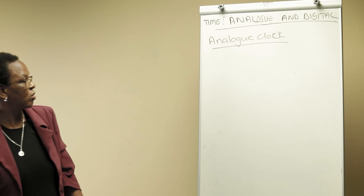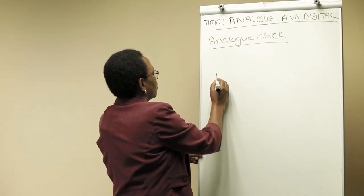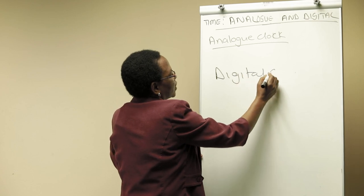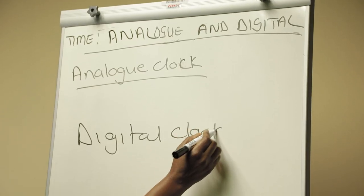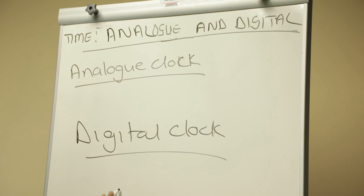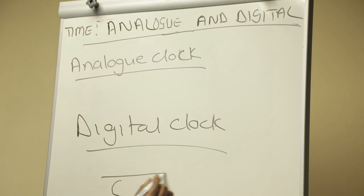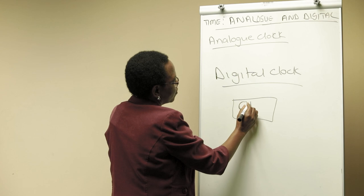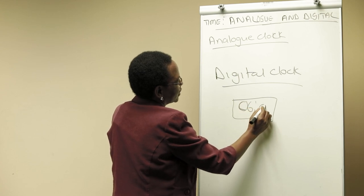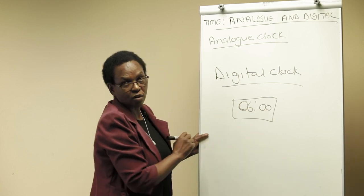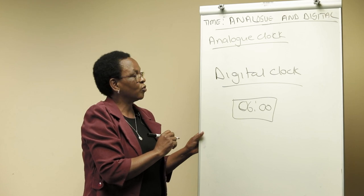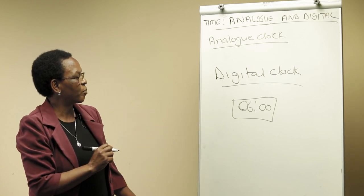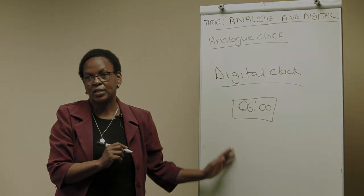We also have what is called the digital clock. The digital clock doesn't have hands, but it is a screen that shows digits only. For example, if it is like this, it is six o'clock. You will find more illustrations and activities in your learner's book.